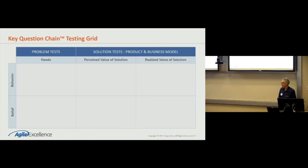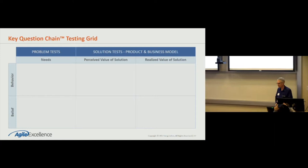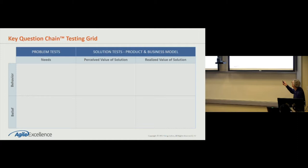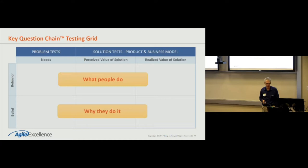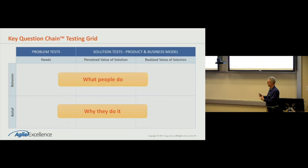I created something called the Key Question Chain Testing Grid. The Key Question Chain is a method for working the fastest path through the learning and validation. It has six main quadrants of different types of tests you can apply, based on your context. On the horizontal axis are three phases: needs validation, perceived value, and realized value. We split those into behavior tests and belief tests. The big thing is: as awesome as behavior tests are because we know what people actually do, behavior tests answer the 'what' but not the 'why.' That's why you want to do both — to get to people's underlying motivations so you can design better solutions.